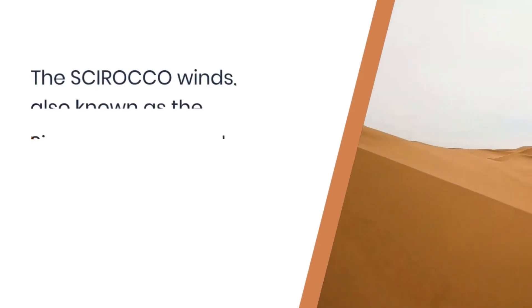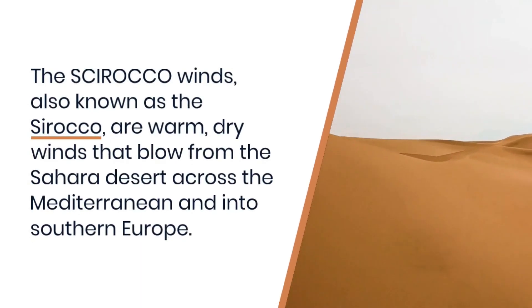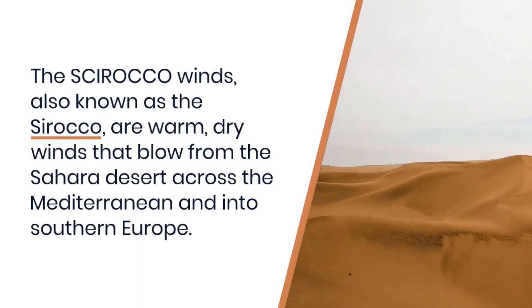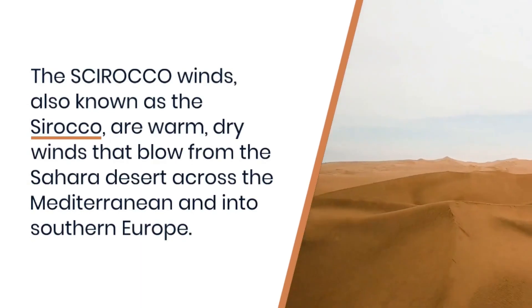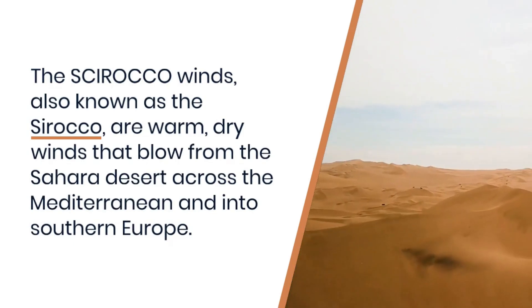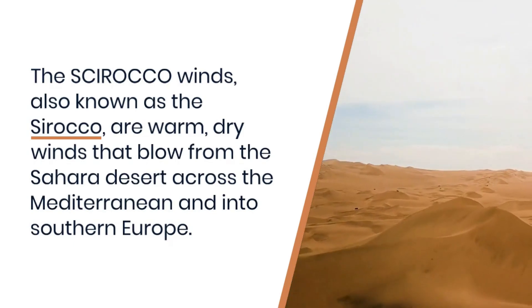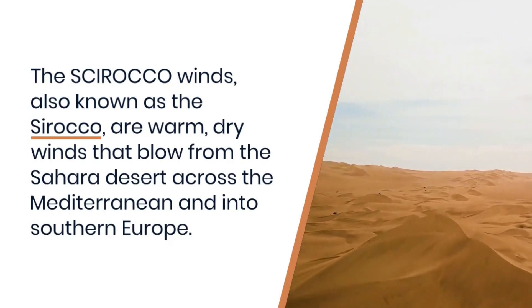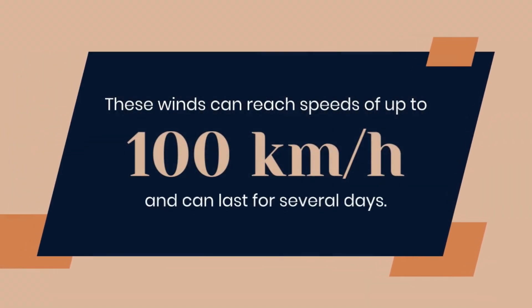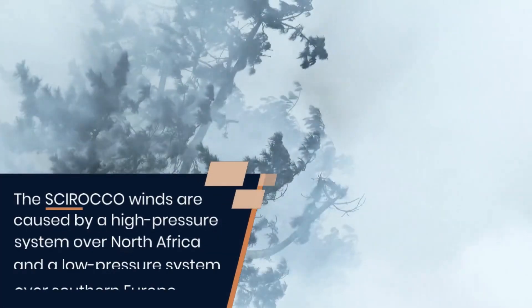The Sirocco winds — also spelled S-I-R-O-C-C-O — are warm dry winds that blow from the Sahara Desert across the Mediterranean and into southern Europe. These winds can reach speeds of up to a hundred kilometers per hour and can last for several days.